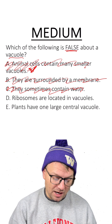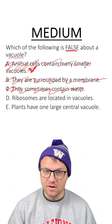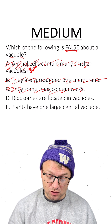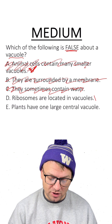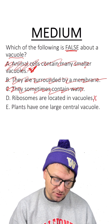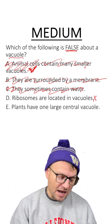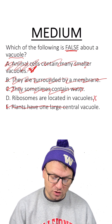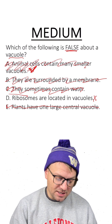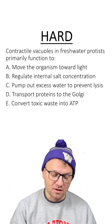D: Ribosomes are located in vacuoles — no, that's not true. Protein synthesis does not occur in the vacuoles. And then E: Plants have one large central vacuole — that is true. So D is the right answer.